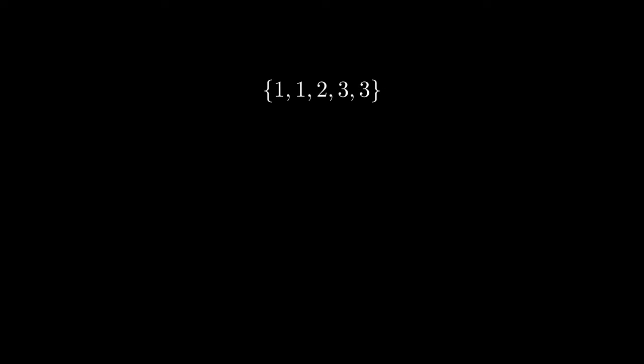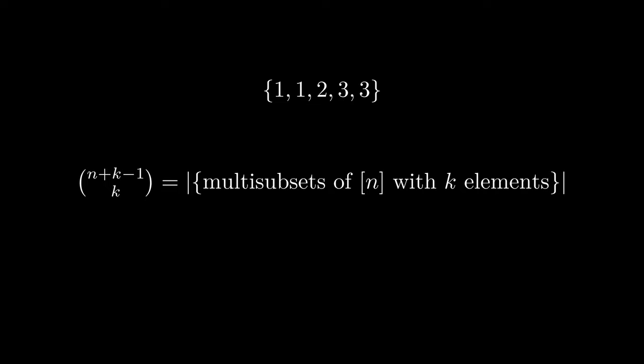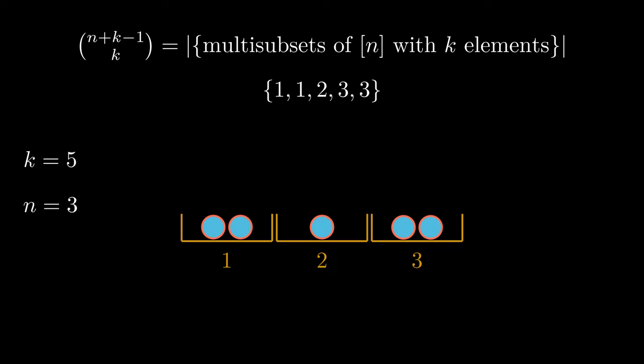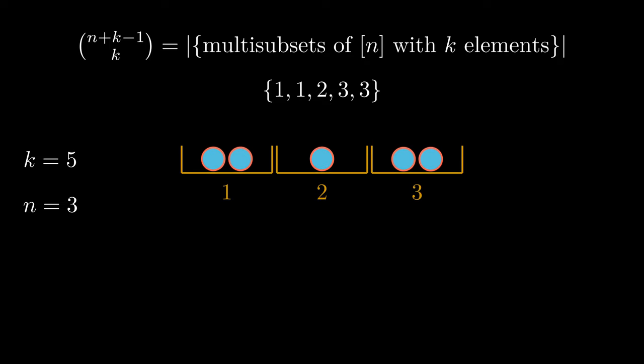Multi-sets are sets in every way except for one important difference: multi-sets allow duplicate elements, like these ones here. The expression we obtain counts multi-subsets of n with k elements. If it's not clear why this expression gives the right count, let's go over why. Imagine we had k identical balls to place into n distinct boxes. To get from a distribution of balls and boxes to our multi-set, simply label each box with an integer from 1 to n, and each ball in a box tells us how many of that element we want in our multi-set. So this distribution of the balls would give us our example multi-set.